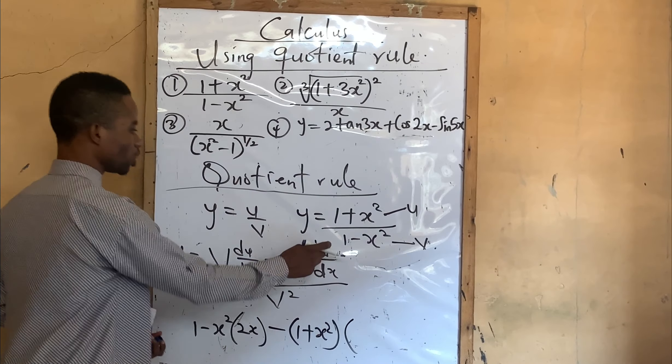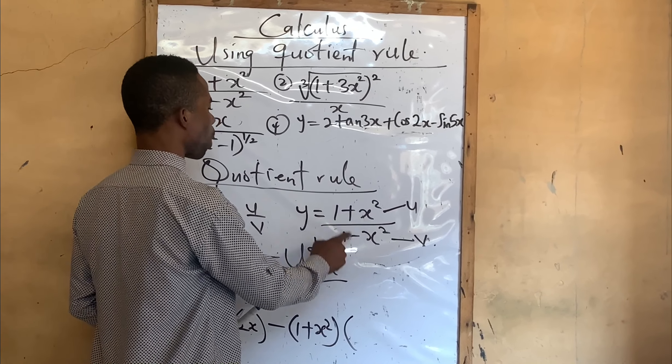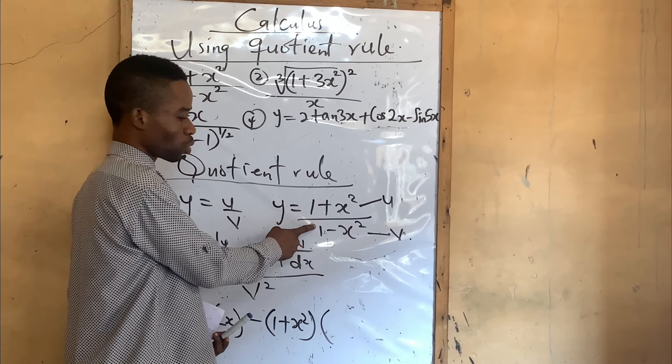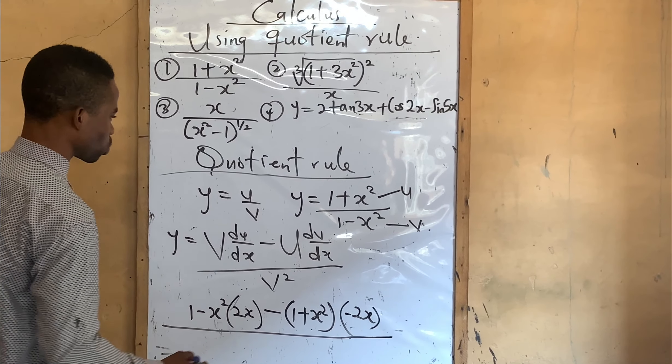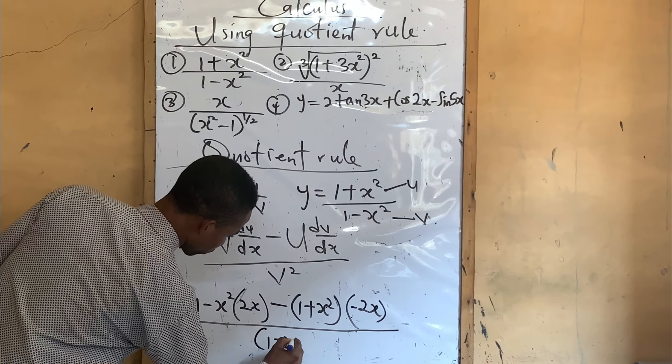Our u is (1 plus x squared). Now we differentiate v. The differential of (1 minus x squared): the differential of 1 is 0, x squared is 2x, and because of the minus sign, dv/dx is minus 2x. All over v squared, which is (1 minus x squared) squared. Opening the bracket: 2x times 1 is 2x, and minus x squared times 2x gives 2x cubed. Minus 2x cubed.